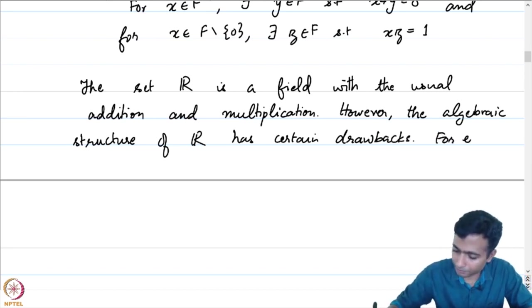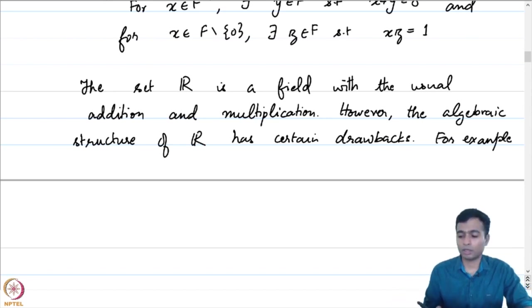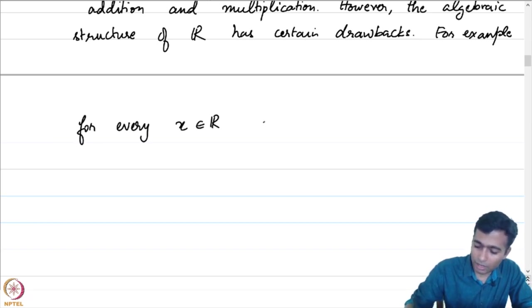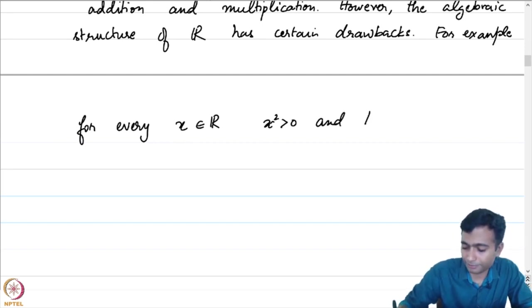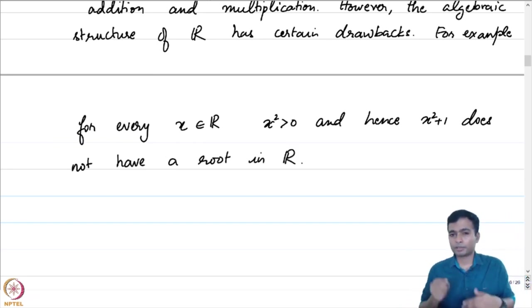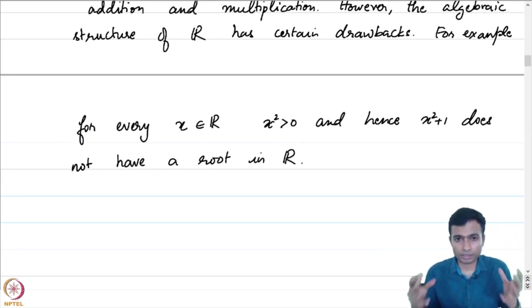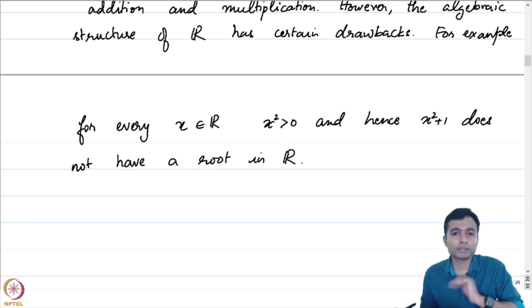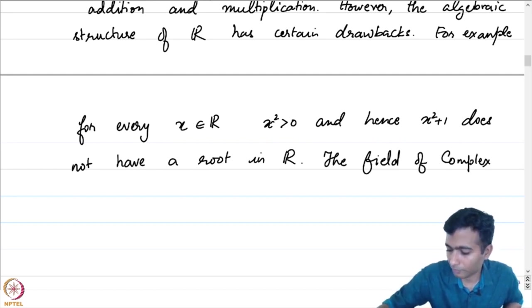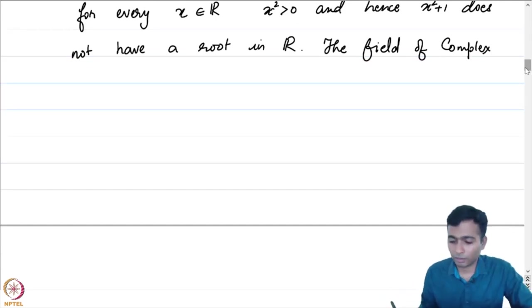However, the algebraic structure of R has certain deficiencies or drawbacks. For example, all polynomials need not have roots in the field of real numbers. For every x in R, x squared is positive, and hence x squared plus 1 does not have a root in R. The complex numbers, the field of complex numbers, is constructed in order to address this particular drawback of finding roots of polynomials.